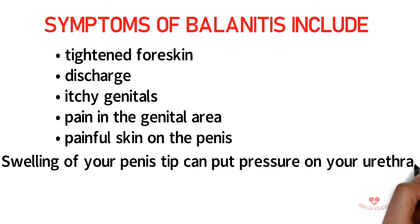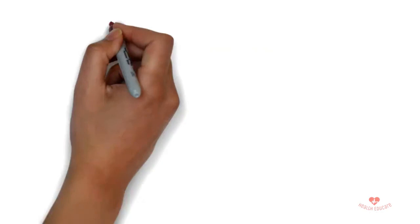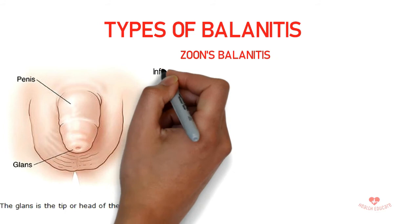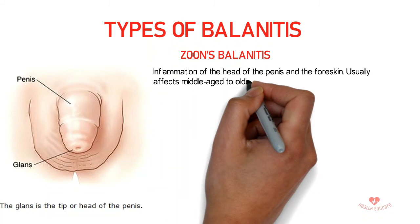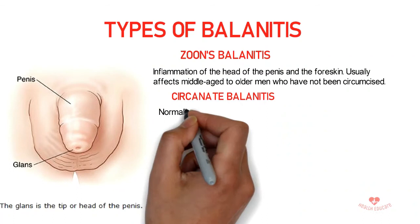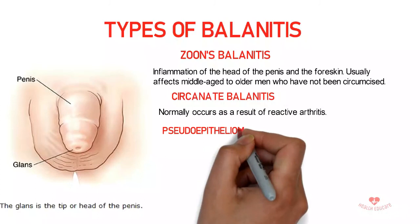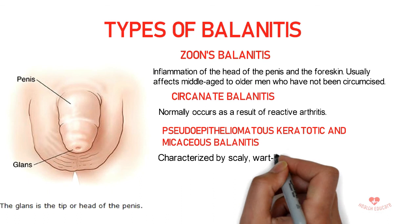Swelling of the penis tip can put pressure on the urethra, which can lead to painful urination. There are three types of balanitis. The first is Zoon's balanitis — inflammation of the head of the penis and the foreskin, usually affecting middle-aged to older uncircumcised men. The second is circinate balanitis, which normally occurs as a result of reactive arthritis. The third is pseudoepitheliomatous keratotic and micaceous balanitis, characterized by scaly, wart-like skin lesions on the head of the penis.